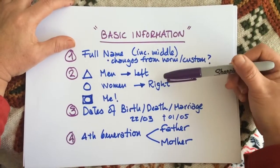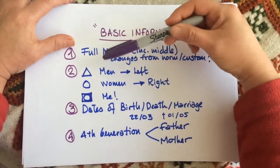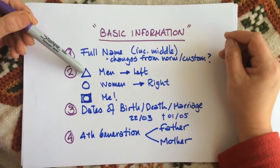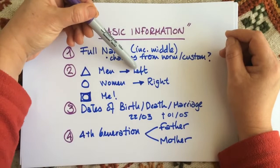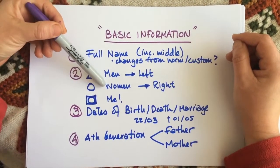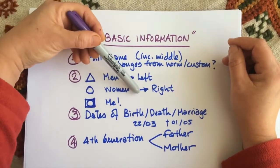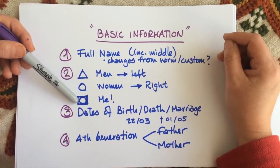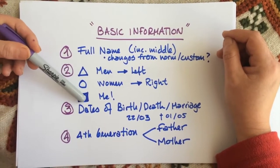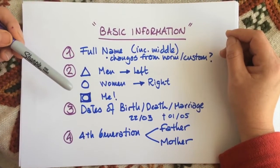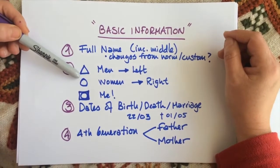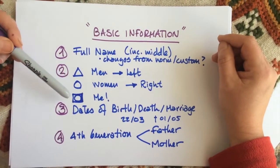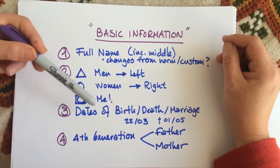We need a way to distinguish in the diagram between men and women so we will indicate when a member is a man by using a triangle and always putting them on the left hand side, by using a circle when it's a woman in your tree placing them on the right hand side in the case of marriages. And in order to distinguish who you are in the tree we will mark it with a square around your circle or your triangle whether you are a man or a woman. In this case I am a woman so I create a circle and put the square around and that's me.